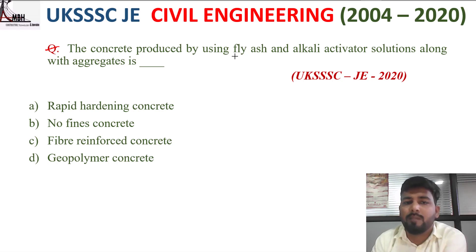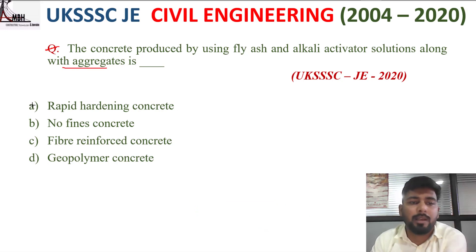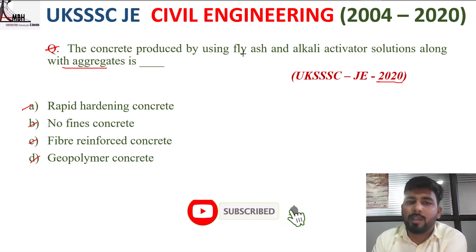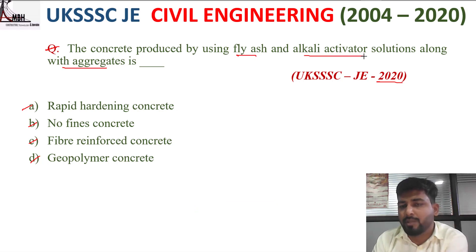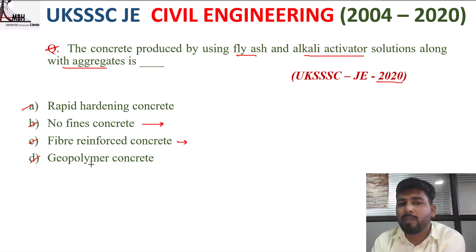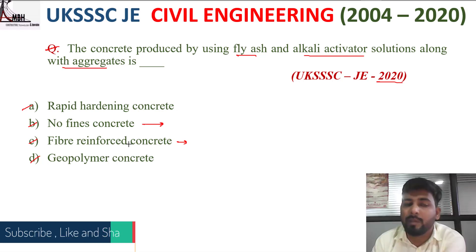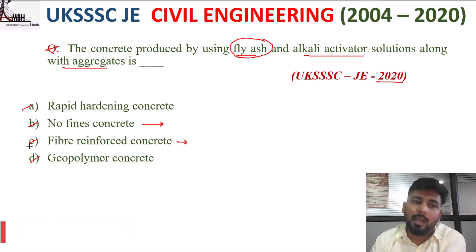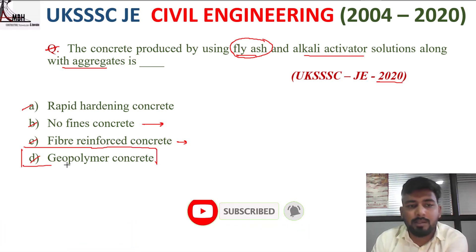The first question: concrete produced by using fly ash and alkali activator solutions along with aggregates is — option A rapid hardening concrete, B no fines concrete, C fiber reinforced concrete, D geopolymer concrete. Fly ash and alkali activator solutions are used as the binding material, so the correct option is D, geopolymer concrete.